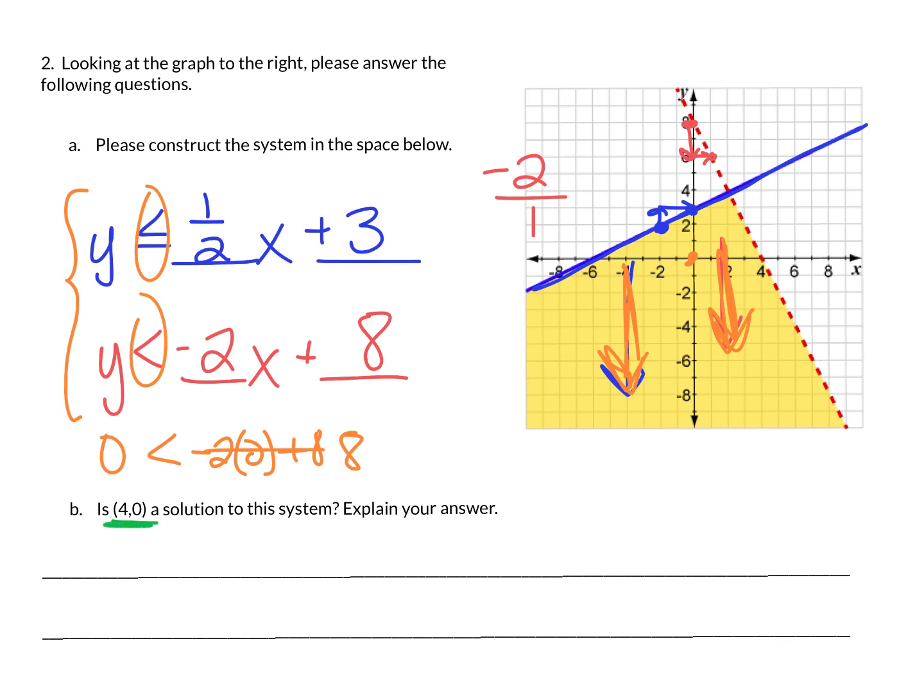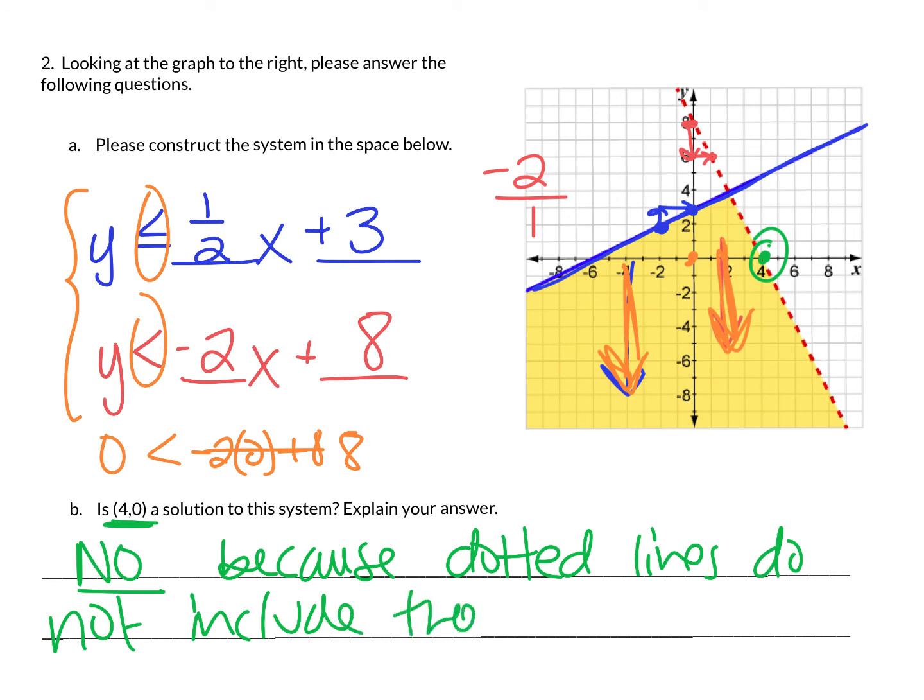If we find that point 4, 0, it's right here. It is on a line. It is a solution if that line is solid. It is not a solution if the line is dotted. So because it's a dotted line, it's no. And it's because dotted lines do not include those points as a solution. So because it's a dotted line, it's not a solution. It's not a solution to the system. If that was a solid line, then our answer would have been different. But because of the dotted line, it's technically not included in that solution space. So make sure you understand the difference for inequalities.